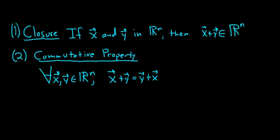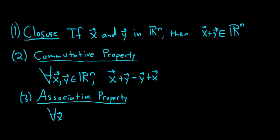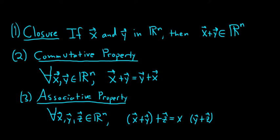So this follows immediately from the commutivity of the components. Three, the associative property of vector addition. This says that for all vectors x, y, and z in Rn, if you take the vector x plus y, so if you add x y and then you add z to it, that's the same thing as first adding y and z and then adding x to it.